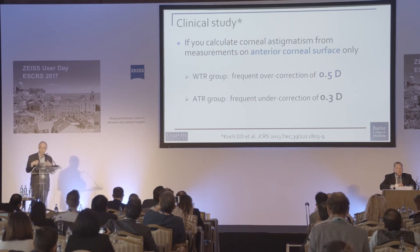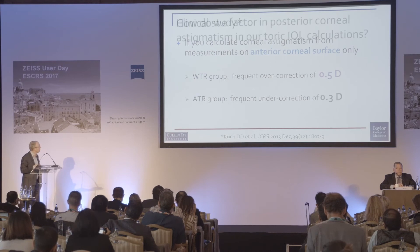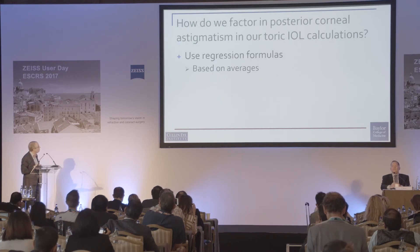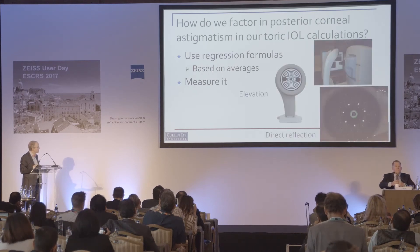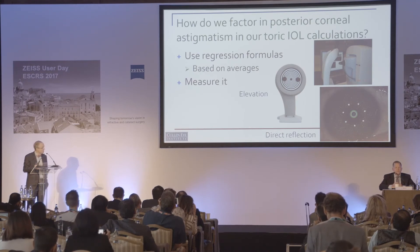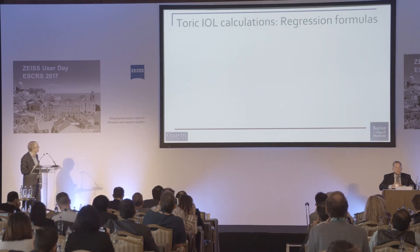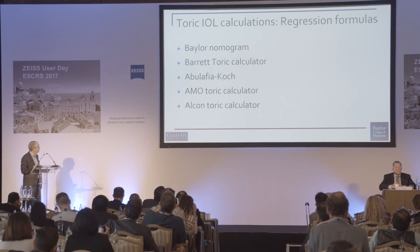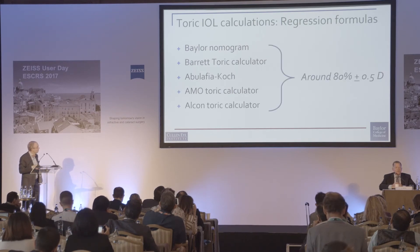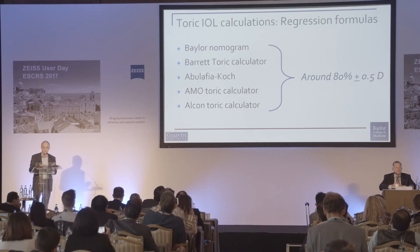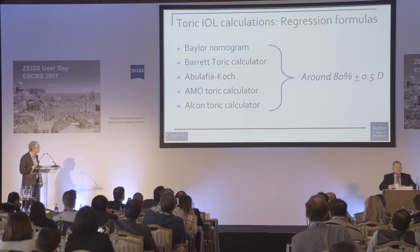When faced with a patient, you can use regression formulas based on averages or directly measure the posterior cornea using technologies like Scheimpflug, OCT, elevation-based methods, or direct reflection as with a Cassini device. With the Barrett formula — which is not purely regression — we're at about 80% within plus or minus a half diopter when we do it really well, so there's still improvement to gain for patients with high expectations.